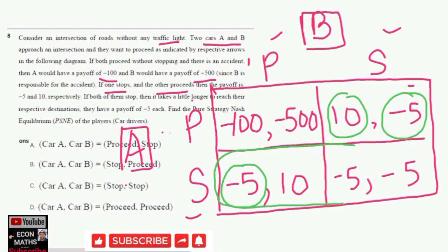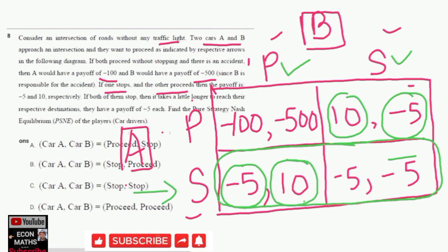If Car A chooses to stop, Car B again has two choices: proceed or stop. The expected payoffs are 10 and minus 5 respectively. Since 10 is greater than minus 5, Car B would choose to proceed when Car A stops, as proceeding gives a higher payoff.